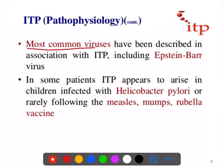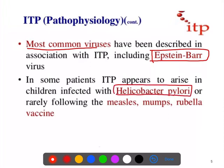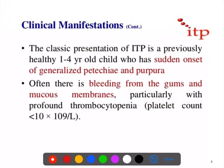The viruses implicated in ITP include Epstein-Barr virus. Some patients also have a history of infection with H. pylori, measles, mumps, rubella, and some vaccinations can also precede ITP.